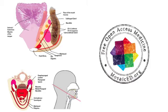So a tiny bit of the submandibular gland is actually in the sublingual space as well. The sublingual space contains the sublingual gland, a tiny bit of the submandibular gland, and two nerves: the lingual nerve and the hypoglossal nerve.